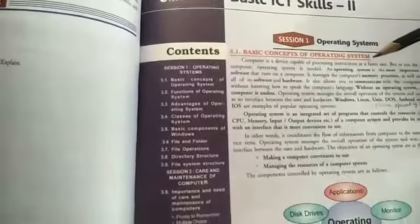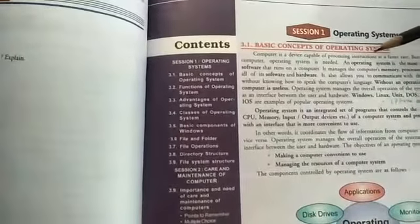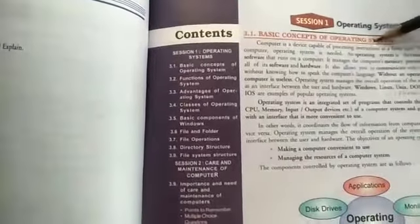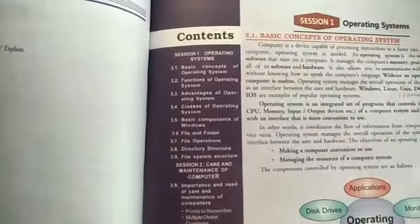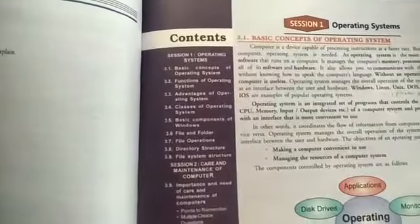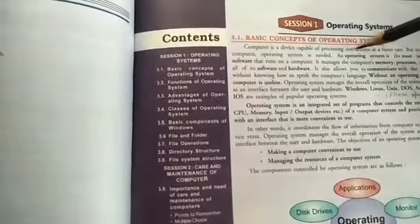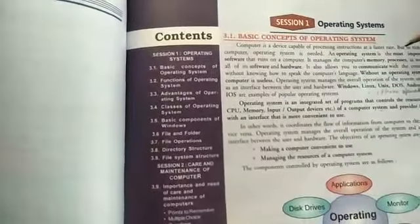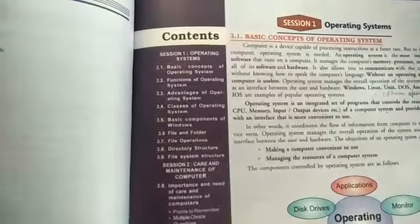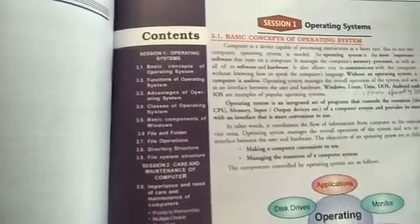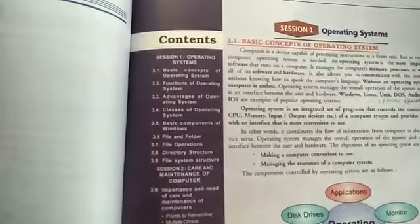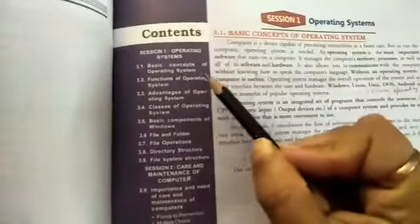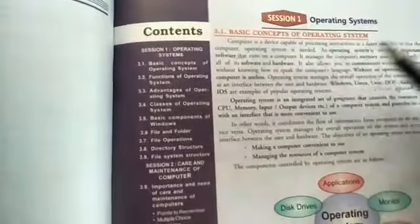First session: operating system. An operating system is like the Windows installed in your system — these are called operating systems. A computer is a device capable of processing instructions at a very fast speed, but to run the computer, an operating system is needed. An operating system is the most important software that runs on a computer.